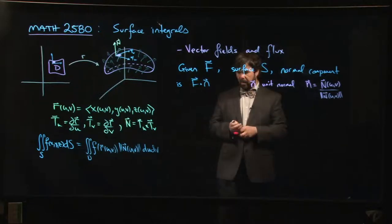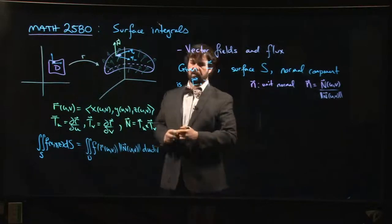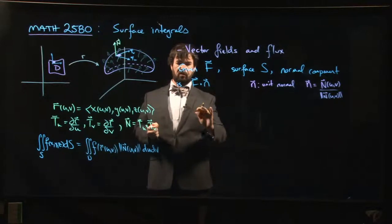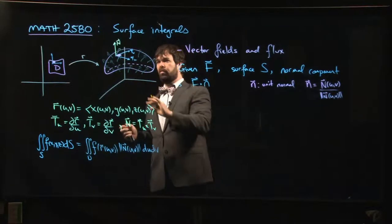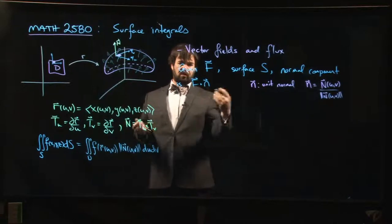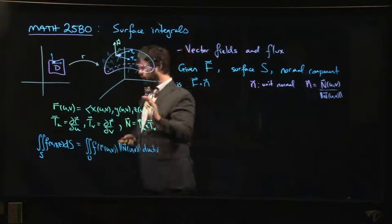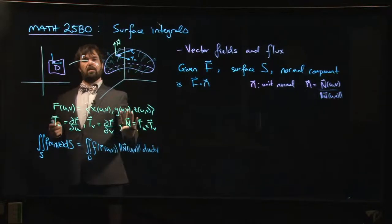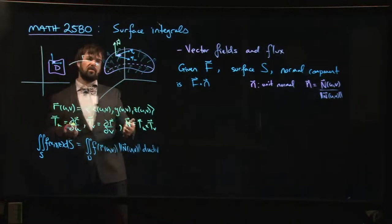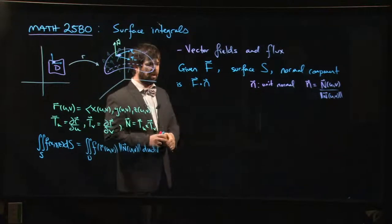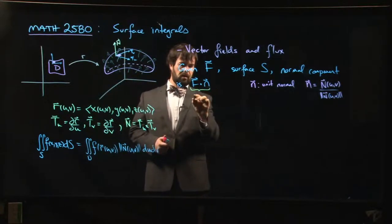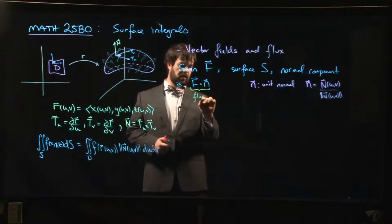You want to think of this normal component as describing a fluid that's flowing. We have this idea of flux—how much fluid is flowing across your surface. We can think of this quantity as being flux per unit area.